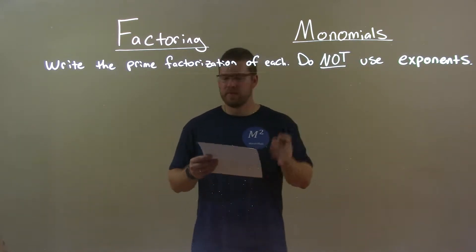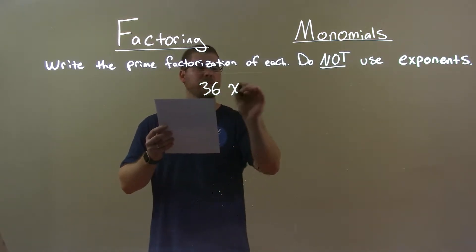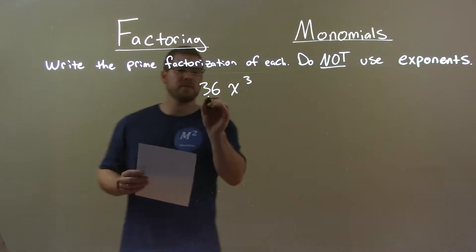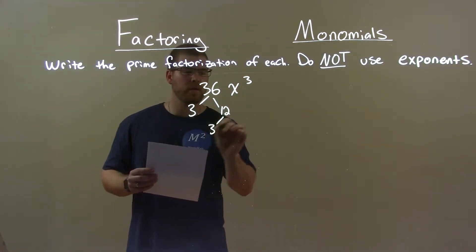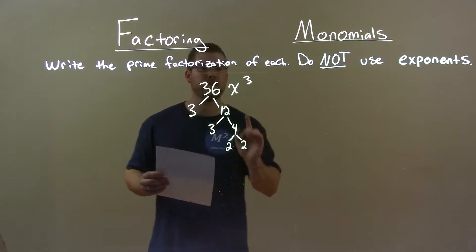If I was given this monomial, 36x to the third power, well, 36 is really just 3 times 12. 12 is 3 times 4, and 4 is 2 times 2.